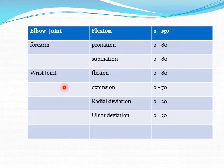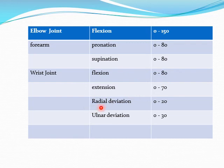For the wrist joint, movements are flexion, extension, radial deviation, and ulnar deviation. Flexion: 0 to 80 degrees. Extension: 0 to 70 degrees. Radial deviation: 0 to 20 degrees. Ulnar deviation: 0 to 30 degrees.